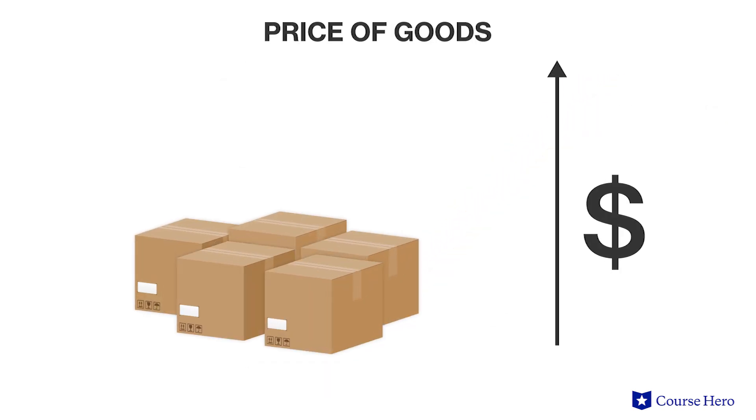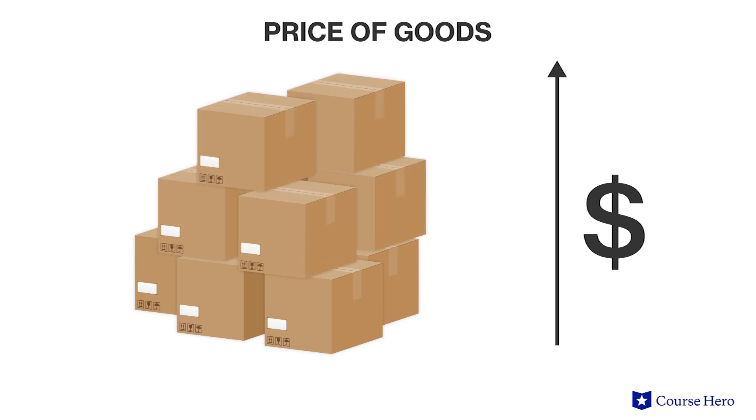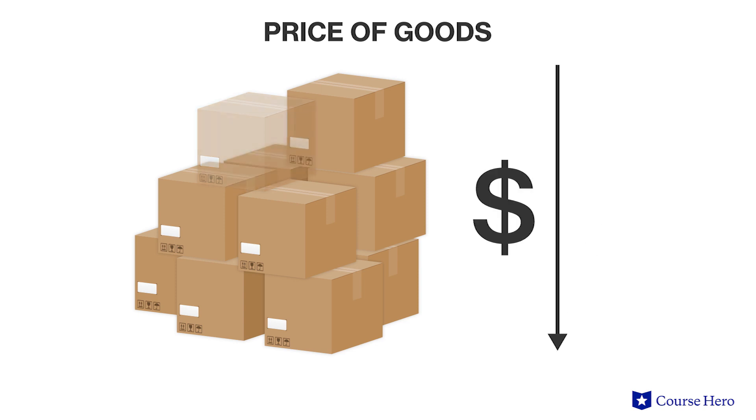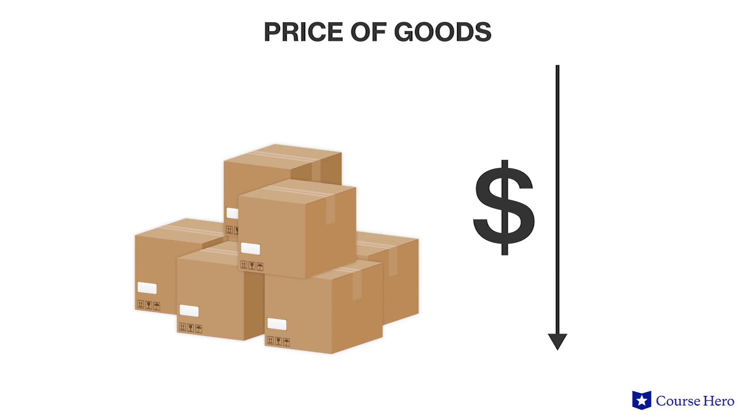As the price of a good rises, all else equal, producers are willing and able to offer a greater quantity of that good for sale. As prices fall, producers are willing to supply less of that good. One of the factors that can be held constant, for example, is the cost of production of the good. As prices rise above the cost of production, producers can make a profit and will be willing to sell the good. If the price of alternative products are also held constant, producers will want to sell more of the good because the price increase makes it more profitable to offer the good for sale compared to the alternatives.